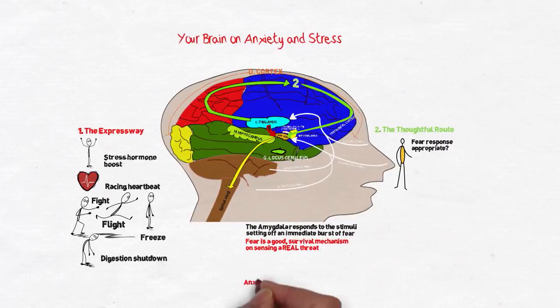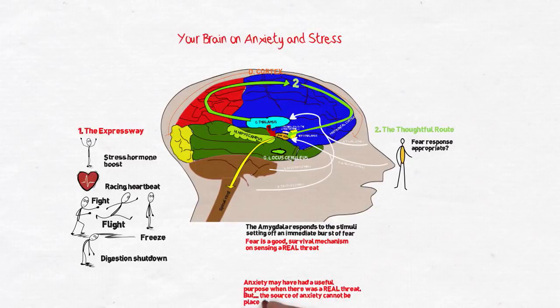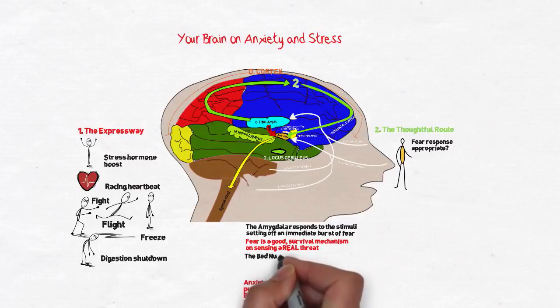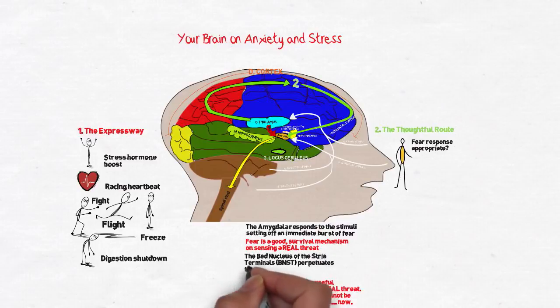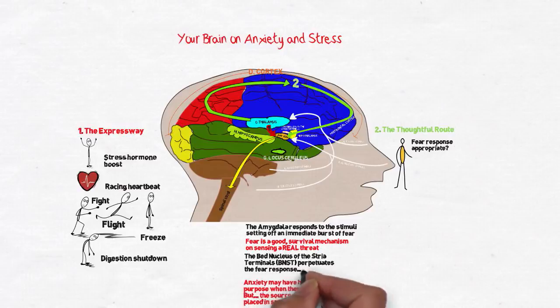However, anxiety is a fear of something that cannot be located in space and time. Most often, it is that indefinable something, triggered initially by something real that you sense, but that in itself is not threatening. But it is associated with a fearful memory, and the bed nucleus of the stria terminalis perpetuates that fear response.